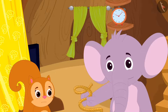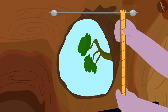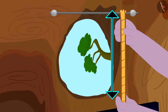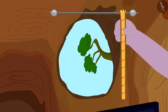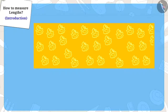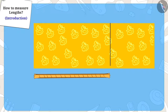Appu started laughing and said, 'Is this all?' He immediately took a rope and measured the length of Chanda's window with it. He cut the exact length of the rope that measured Chanda's window and told her that she has to buy a cloth as long as the rope from uncle's shop.